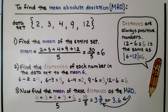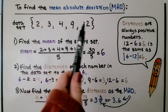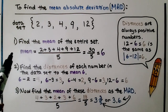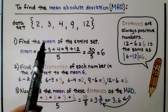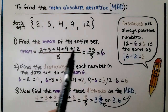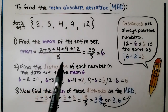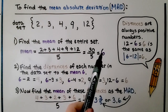To find the mean absolute deviation, the MAD, here is our data set. We've got five numbers in our data set. We first find the mean of the entire set, so we add all these digits and get 30. Because there are 5 of them, we divide it by 5. 30 divided by 5 is 6. The mean for the entire set is 6.